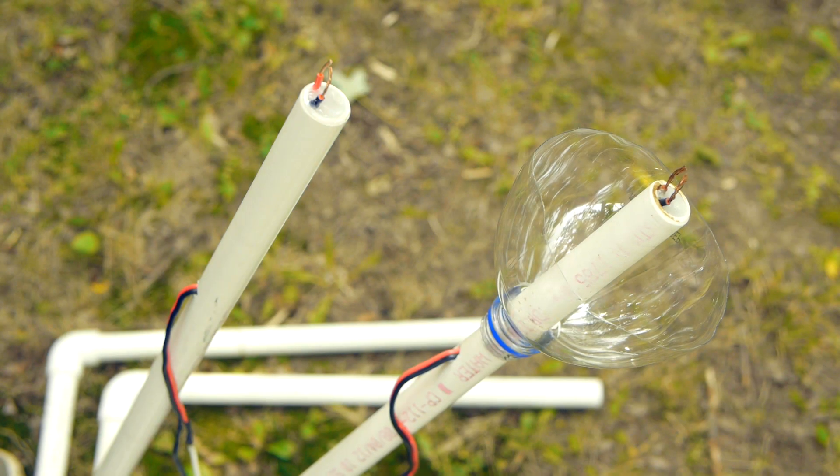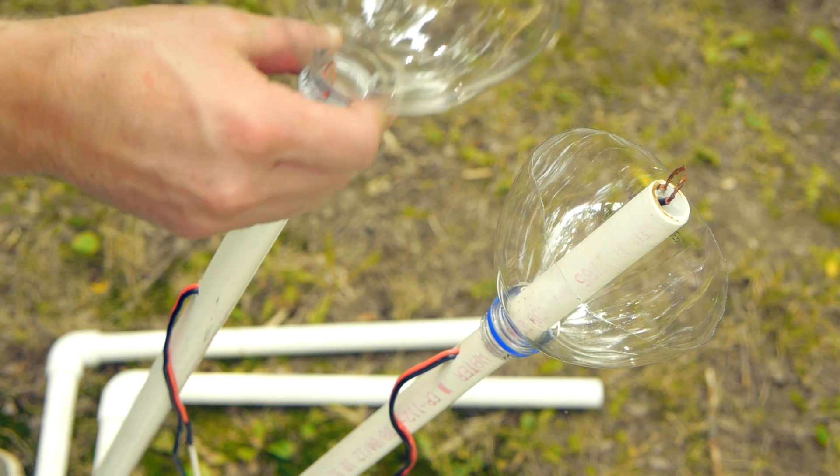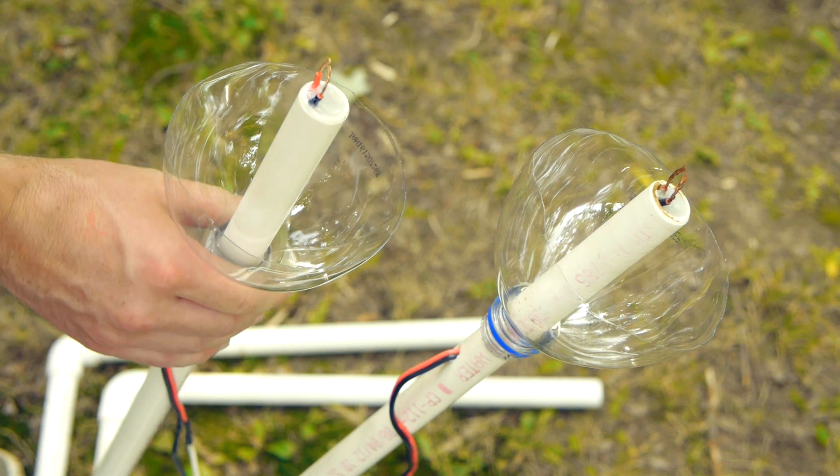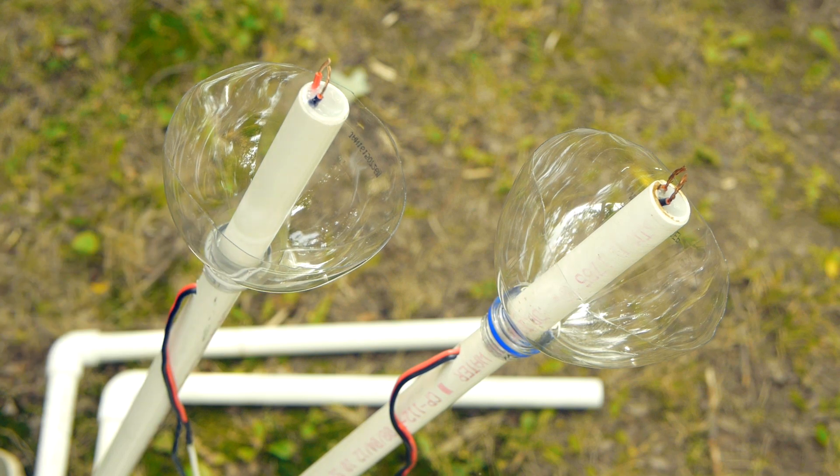The final step is to install the top of a two-liter soda bottle over the end of the launcher to act as a blast shield. This will help contain any fuel overspray when the rockets launch.